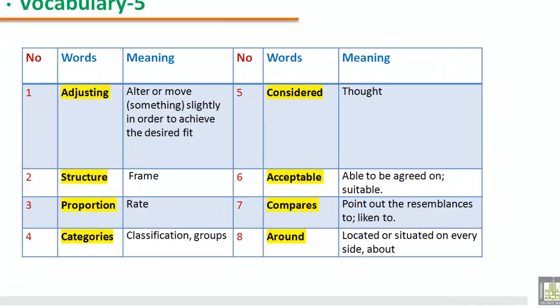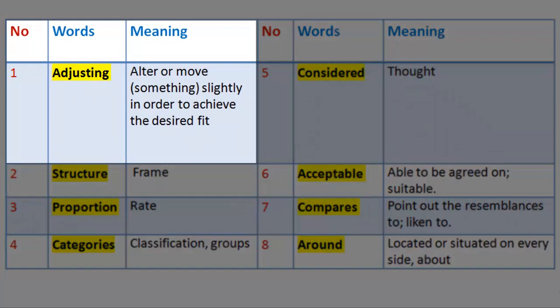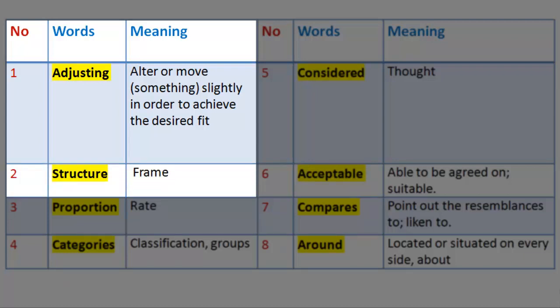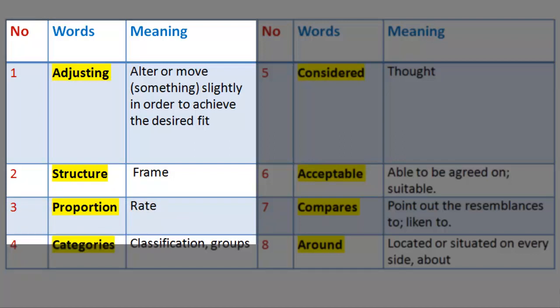Vocabulary 5. Number 1. Word: Adjusting. Meaning: Alter or move something slightly in order to achieve the desired fit. Number 2. Word: Structure. Meaning: Frame. Number 3. Word: Proportion. Meaning: Rate. Number 4. Word: Categories. Meaning: Classification, groups.